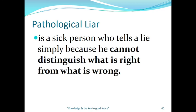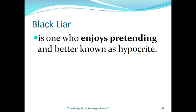The pathological liar is a sick person who tells lies simply because they cannot distinguish what is right from wrong — they have a mental condition and tell whatever they want. The black liar is one who enjoys pretending and is better known as a hypocrite — in the modern era, these are social climbers. They enjoy pretending to be something they are not, and calling someone a social climber is the same as calling them a hypocrite or black liar.